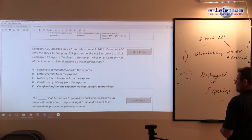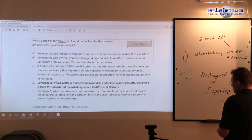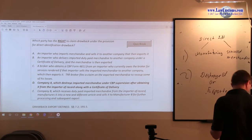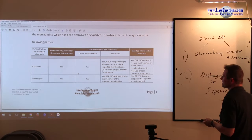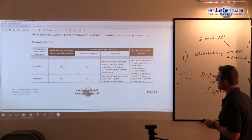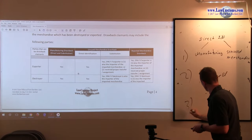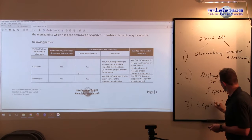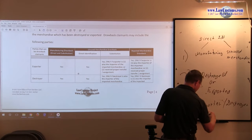So let's go back to the question. Which party has a right to claim drawback? We're talking about direct identification. Going to our chart, we know that the right, unless assigned for direct identification, is given to the exporter or destroyer. So the default right is the exporter or destroyer, unless assigned.